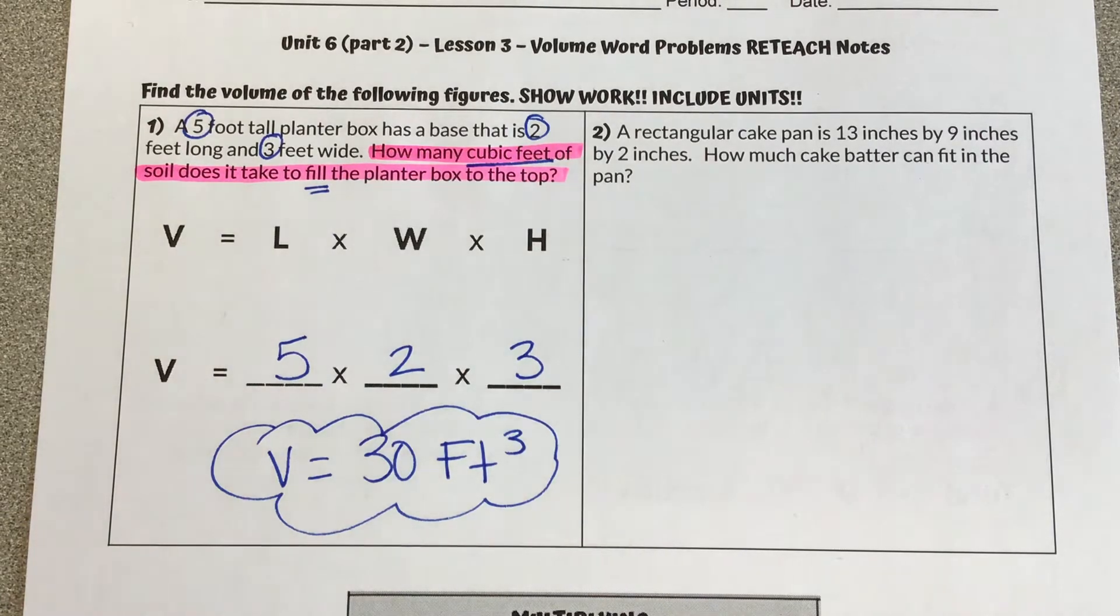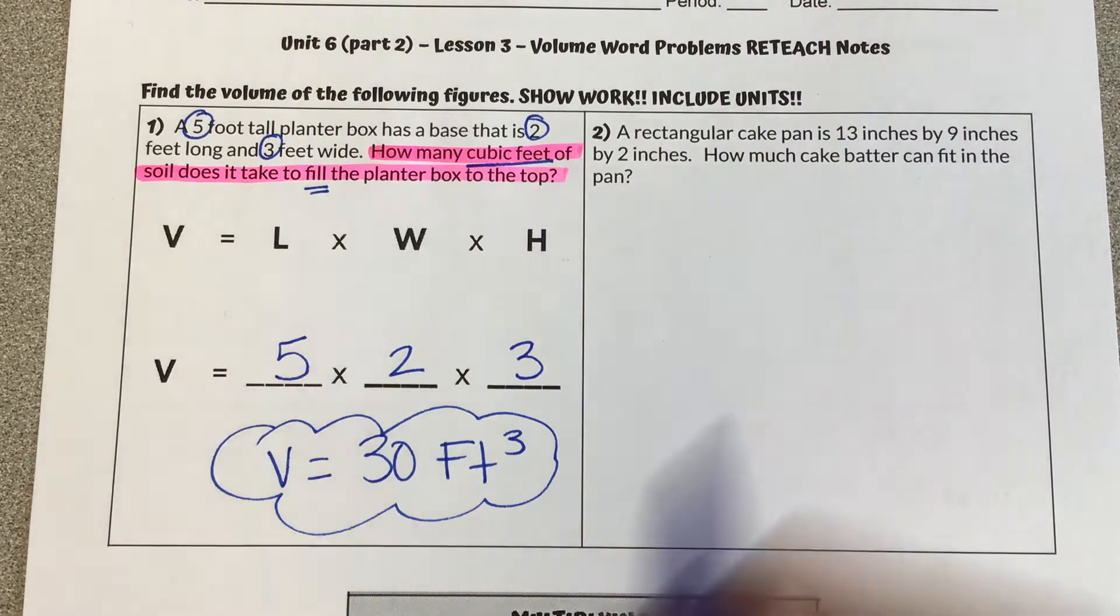I plug that into my calculator and I get 30 feet cubed. Number two, a rectangular cake pan is 13 inches by 9 inches by 2 inches. How much cake batter can fit in the pan?